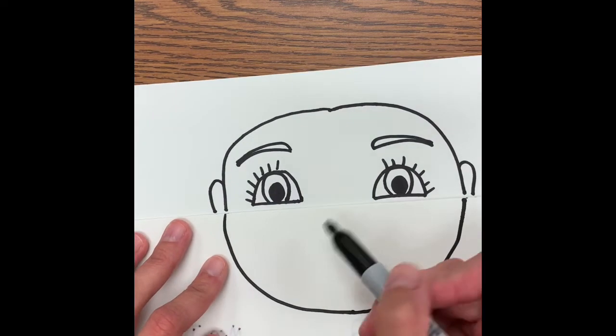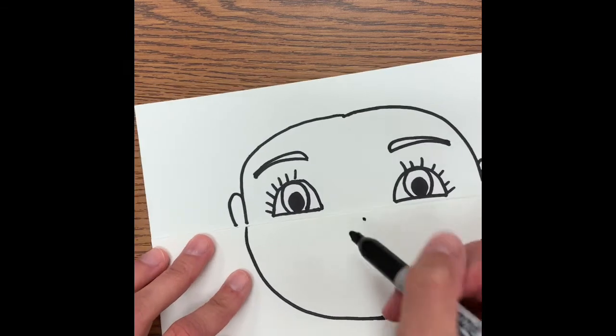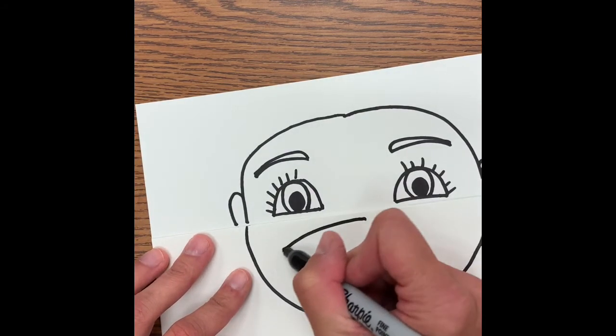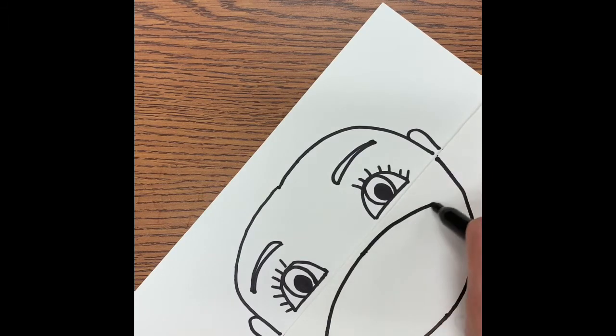Now we're going to draw our mask. So I'm going to find that middle again, draw a dot. We're going to do a curve line down to this side and a curve line down to that side.